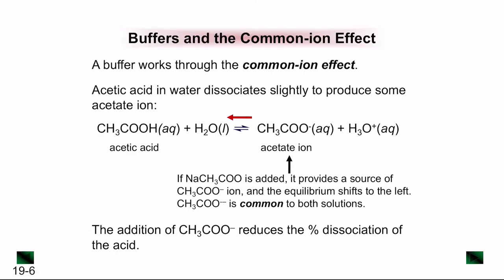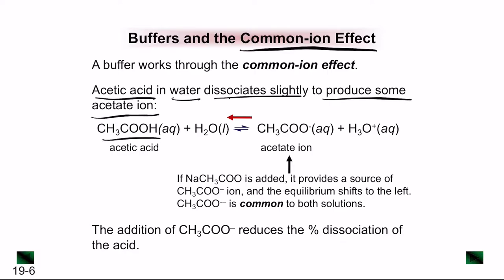The acetate buffer is made by mixing 1 M acetic acid with 1 M sodium acetate, which is the conjugate base of acetic acid. Buffers work using the common ion effect. For example, acetic acid in water dissociates only slightly to produce some acetate ion. Acetic acid reacts with water to form acetate ion and H3O+, but the equilibrium is pointed toward the left since the weaker side still has the acetic acid.